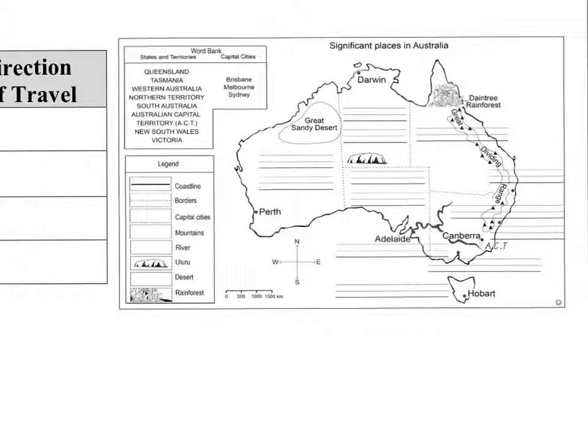In lesson two, you learned about cartographic conventions and you learned all about BOLTS and what they stand for. They stand for border, orientation, legend, title, scale and source. Hopefully, in the last lesson, you filled out this map of Australia called Significant Places in Australia. Did you label all the states and territories, the capital cities that are missing and filled in the legend, all the things that maps need to comply with the BOLTS acronym.